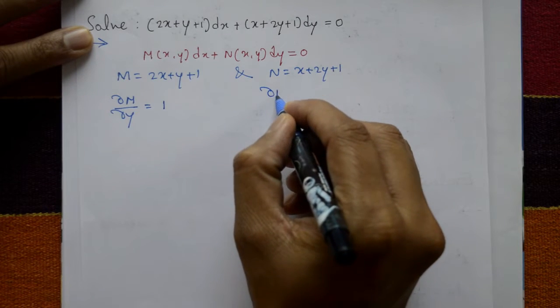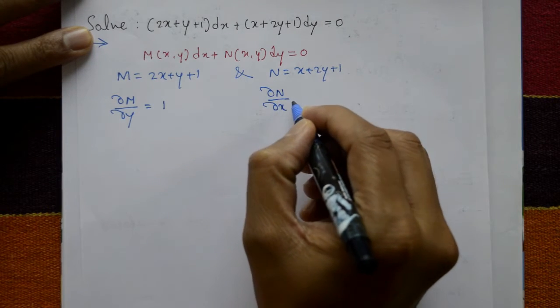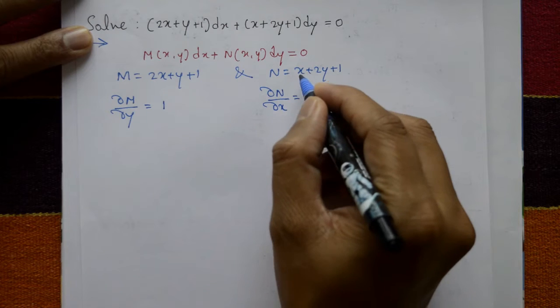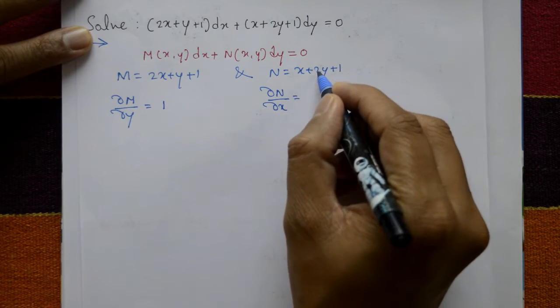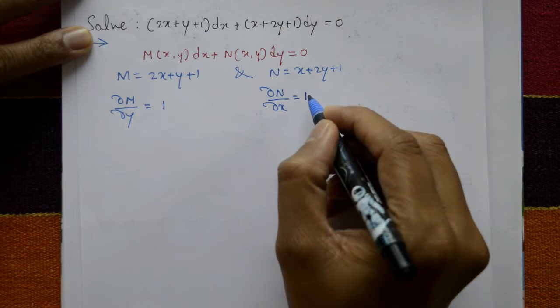And differentiate N with respect to x partially. This is with respect to y and second one is with respect to x. So remaining variables are constant. Zero, zero, differentiate this becomes 1.